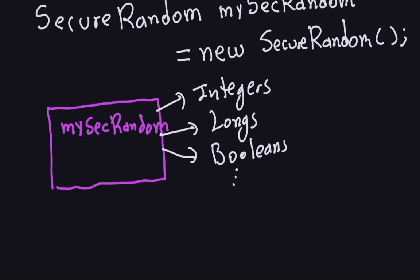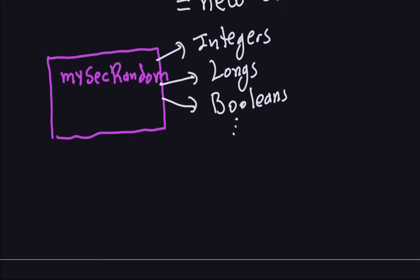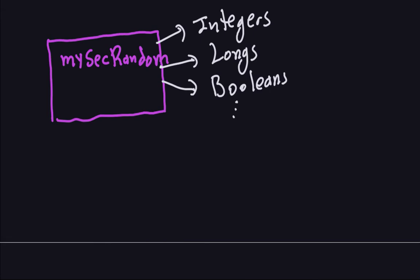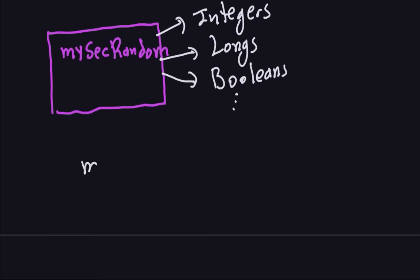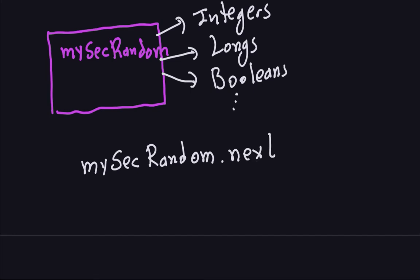For example, to generate a random integer, you do exactly the same as you do with Random. You write the name of your object — in my case 'mySecureRandom' — and call dot nextInt, exactly the same as with Random. You can put in a number as the upper bound for your integer. You can also create a list the same way — with for loops or with streams — exactly the same as it works with Random.